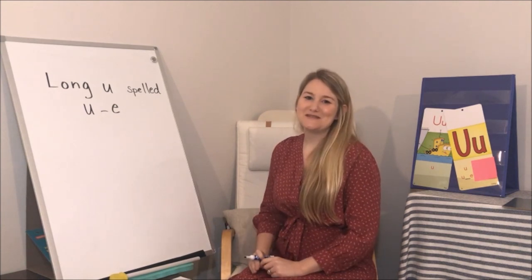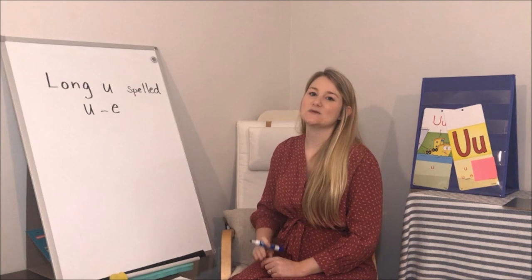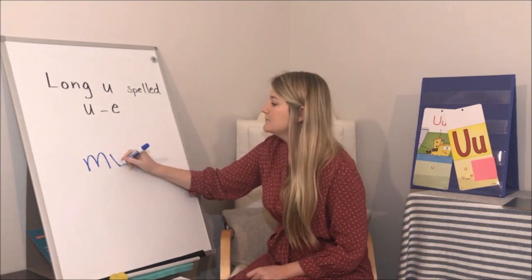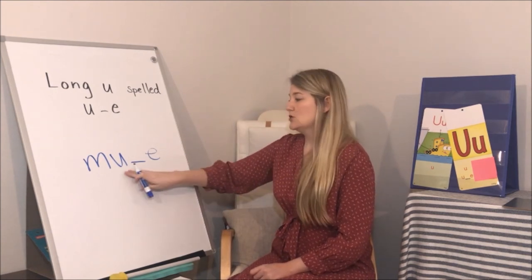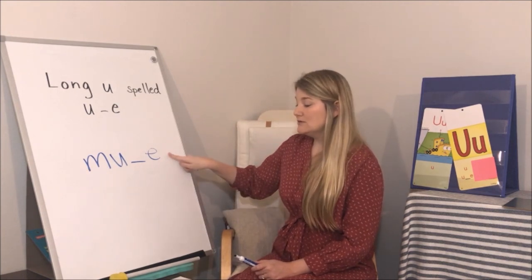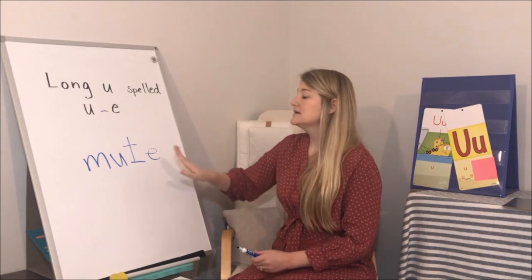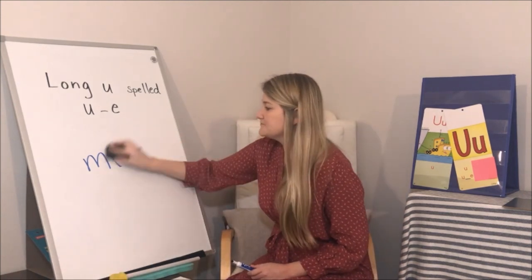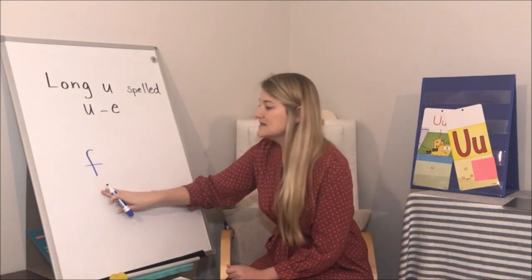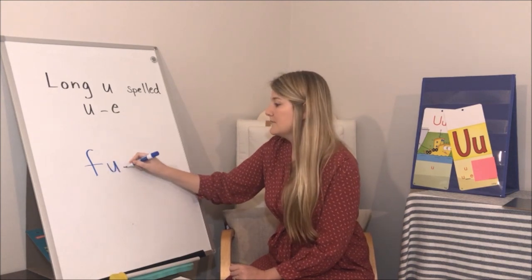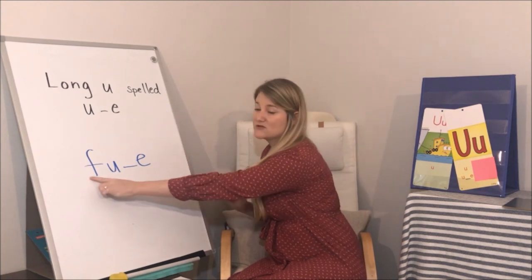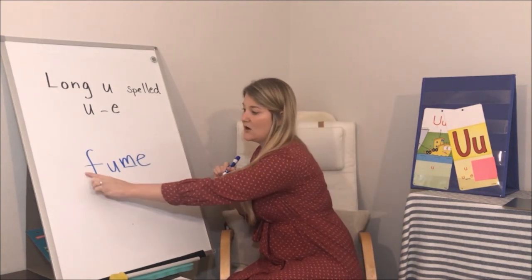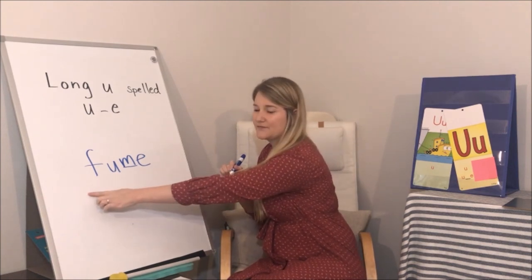The last thing we're going to do together is use sound-by-sound blending to blend words with the long U sound. Ready? Sound — M, sound — U, blend — M-U, sound — T, put it all together — 'mute.' What's the word? Mute. Good. Next word: sound — F, sound — U, blend — F-U, sound — M, all together — what's the word? Fume.